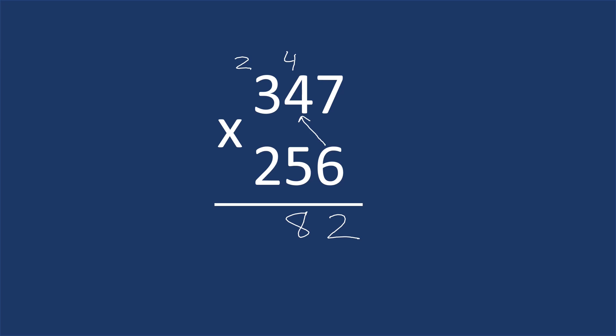Now we take the 6, multiply by the 3. 6 times 3 is 18, plus the 2 that we carried is 20. Then we need to get rid of what we carried, so we won't mistakenly use that later.